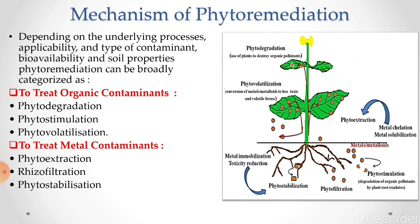There are different mechanisms by which plants remediate wastewater. Depending on the underlying processes, capability, type of contaminant, bioavailability and soil properties, phytoremediation can be broadly classified into two categories. First, to treat organic contaminants — by three mechanisms: phytodegradation, phytostimulation and phytovolatilization. Second, to treat metal contaminants — by three mechanisms: phyto extraction, rhizofiltration and phytostabilization.